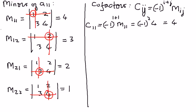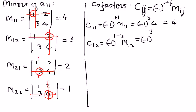The cofactor of element A12 is C12 equal to negative 1 raised to the power of 1 plus 2, where i equals 1 and j equals 2, times M12. Negative 1 raised to the power of 3 is negative, and M12 is 3. Therefore, the cofactor of element A12 is negative 3. As you can see, the minor is positive 3 but the cofactor is negative 3.